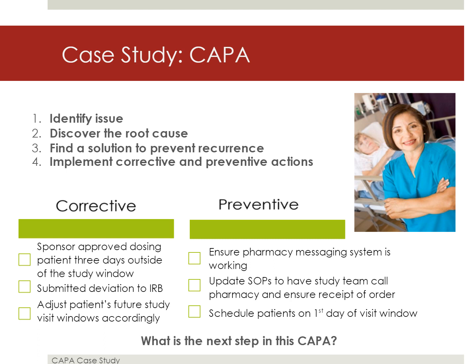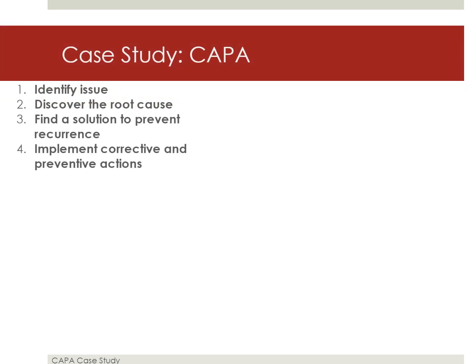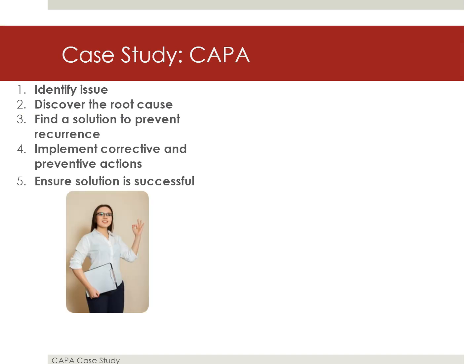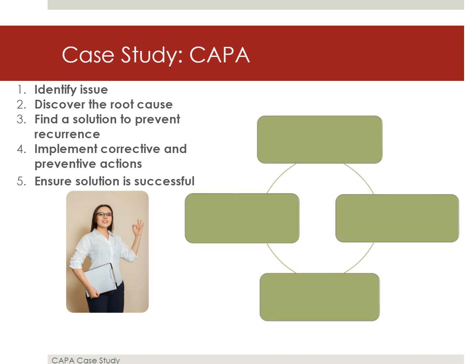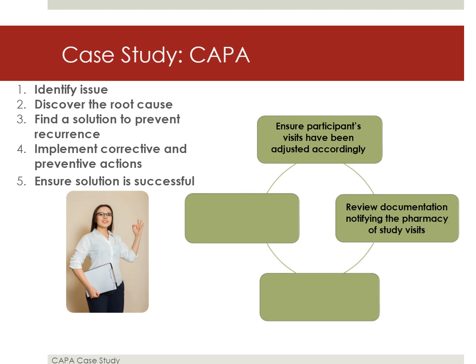What is the next step in the CAPA? Finally, the study team should put safeguards in place so that this issue does not recur. You, the monitor, should verify that this CAPA is properly implemented during the next interim monitoring visit by checking to see that the participant's visit schedule has been pushed back by one day, examining documentation notifying the pharmacy of study visits, ensuring that visits are scheduled on the first day of dosing windows, and reviewing changes to SOPs.